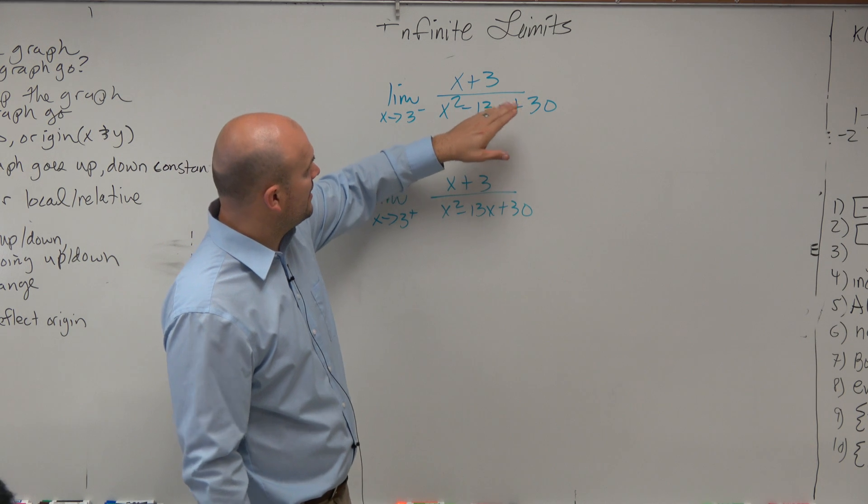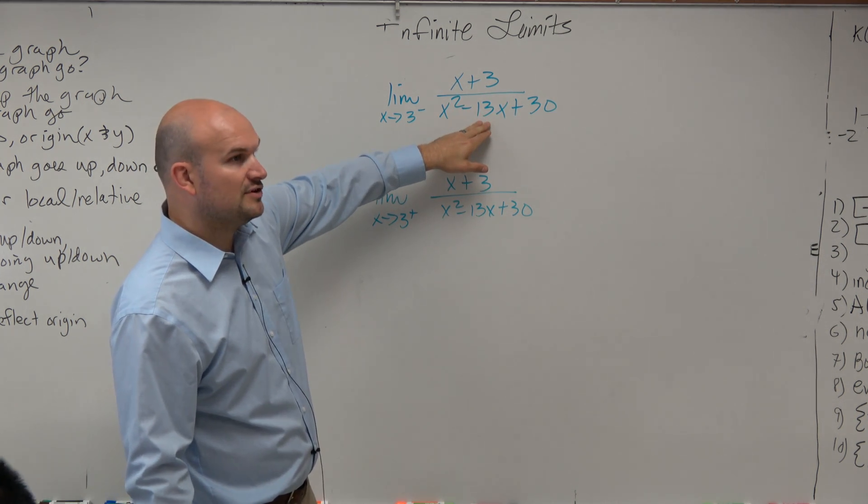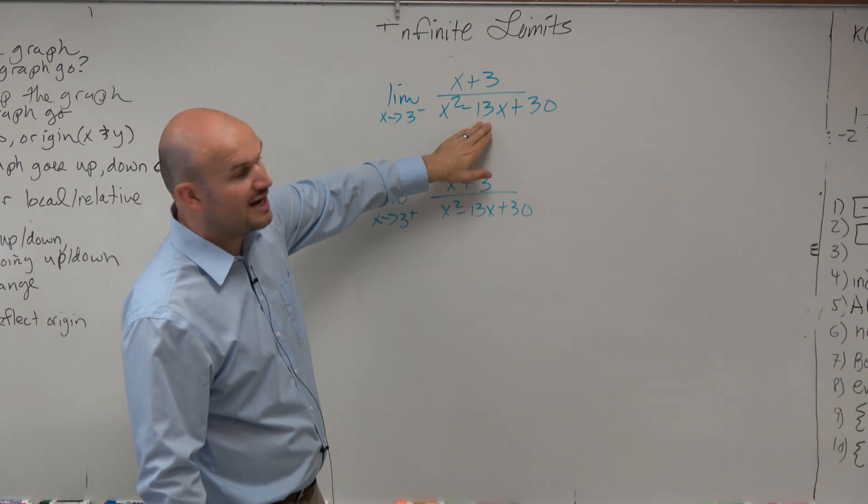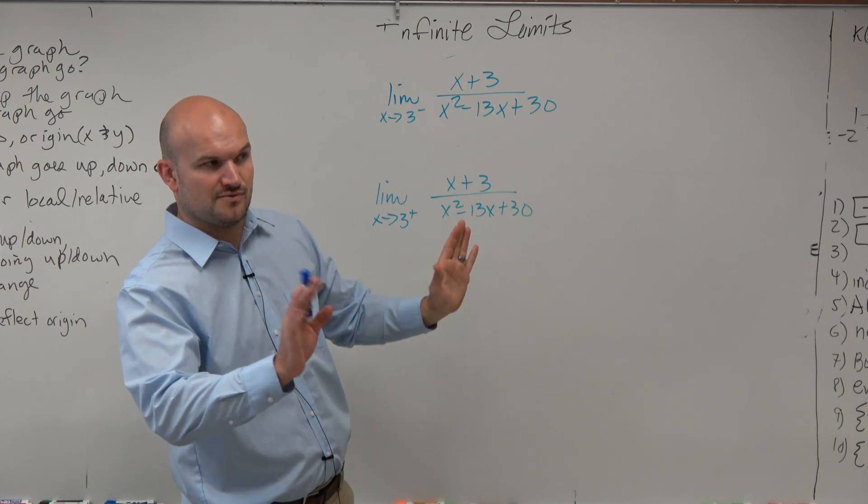So we just look at 3 and say, alright, 3 squared is going to be 9. We have negative 13 times 3 is going to be negative 39. So 9, negative 39 plus 30 is negative 9. Negative 9, positive 9, that goes to 0. That doesn't work.